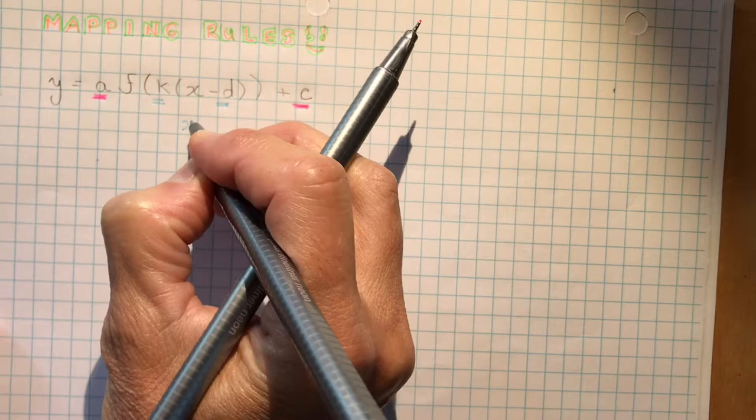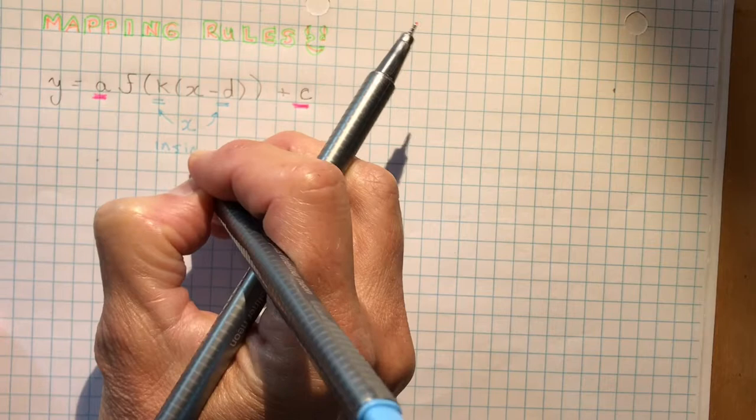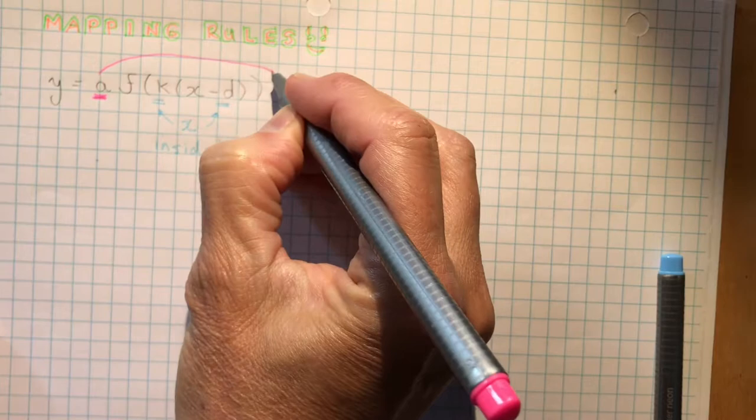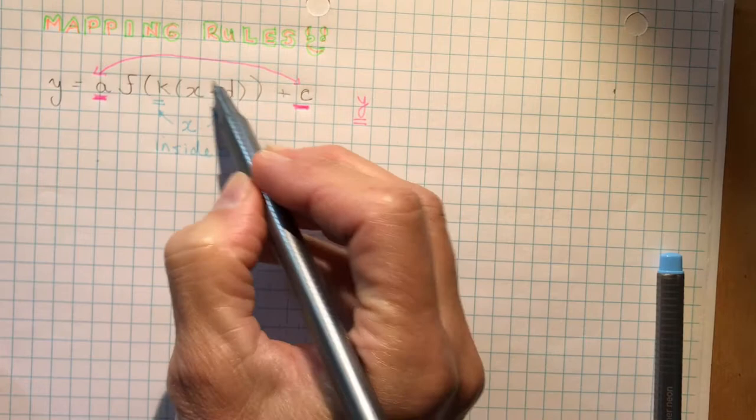So that means that K and D affect the X, these changes. They're inside the brackets, that's where you find them. This is going to be really easy once you figure this out. It works all the time. And the Y changes are outside the bracket, outside. So this is telling you that you're going to make a change to the X part, these tell you the Y parts.